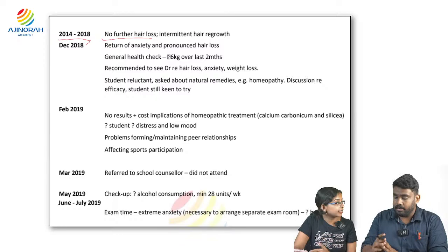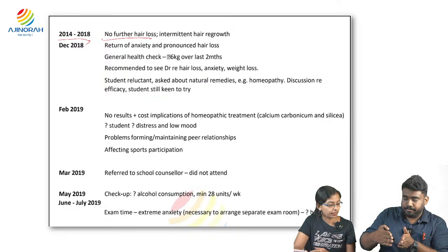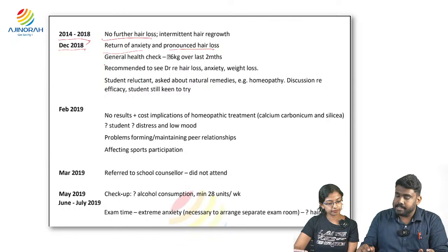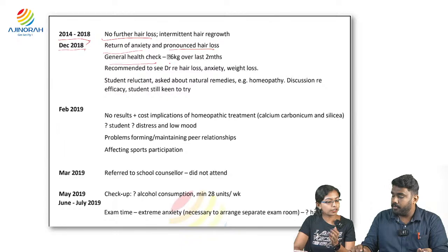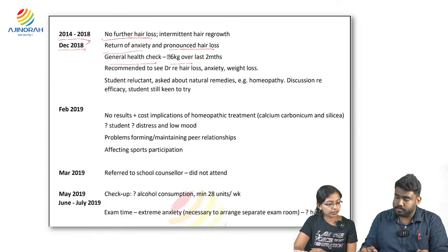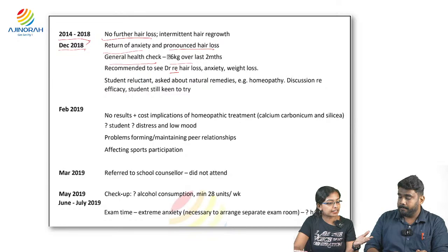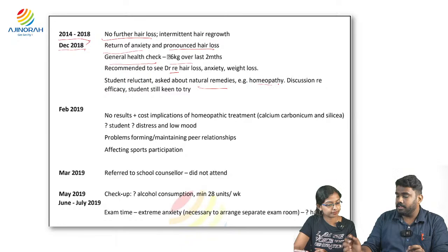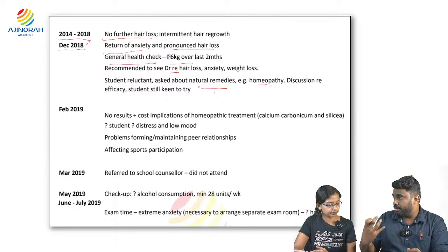In December 2018, he had a return of anxiety and pronounced hair loss. During a general health check, a loss of 6 kg over the last two months was found. He was recommended to see a doctor for hair loss but was reluctant and asked for natural remedies like homeopathy. In February 2019, homeopathic treatment showed no results. He appeared distressed and in low mood, with problems forming or maintaining peer relationships affecting his sports participation — symptoms implying depression.